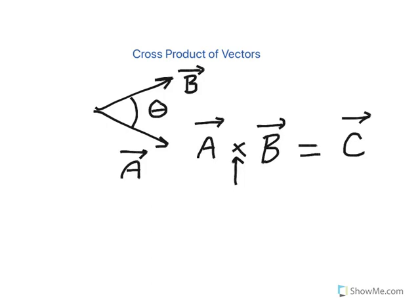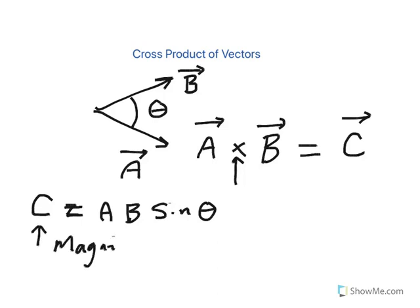So this vector C has a magnitude. The magnitude of this vector C is equal to the magnitude of A times the magnitude of B, meaning the length of A times length of B times the sine of the angle between the two vectors. So this is the magnitude of this vector which is a cross product of A and B.